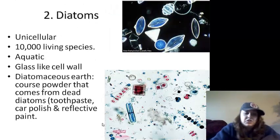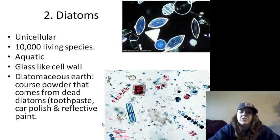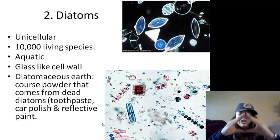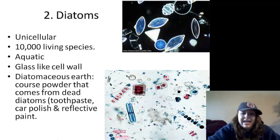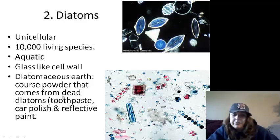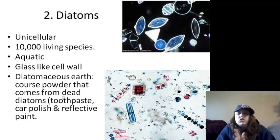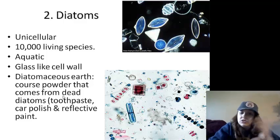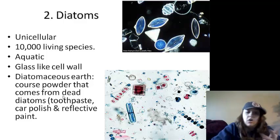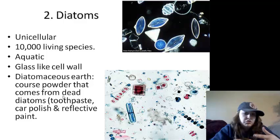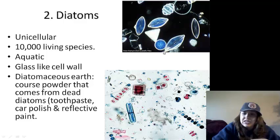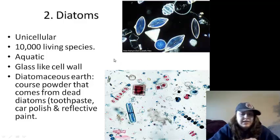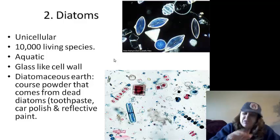Diatoms are unicellular, with over 10,000 different species. They are aquatic, glass-like, and have geometric shapes. They create diatomaceous earth — when these organisms die, they fall to the earth and create diatomaceous earth powder. This powder can be used as an abrasive in toothpaste to scrape off plaque, in car polish to scrape off dirt or impurities, and in reflective paint because of their glass-like shape. Glass-like figures with geometric shapes are going to be diatoms.